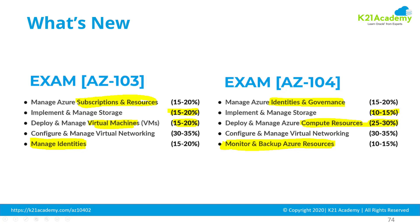The weightage of storage has gone down slightly in AZ-104. The major difference is in compute or deploy and manage virtual machines. In AZ-103, VM management was just 15 to 20 percent, whereas now it's been increased to 25 to 30 percent. Two additional topics have been added to AZ-104: web apps as well as Kubernetes — Azure Kubernetes Service — because Azure now expects you to handle not only infrastructure as a service but also platform as a service. That's why you see 25 to 30 percent extra weightage in compute.